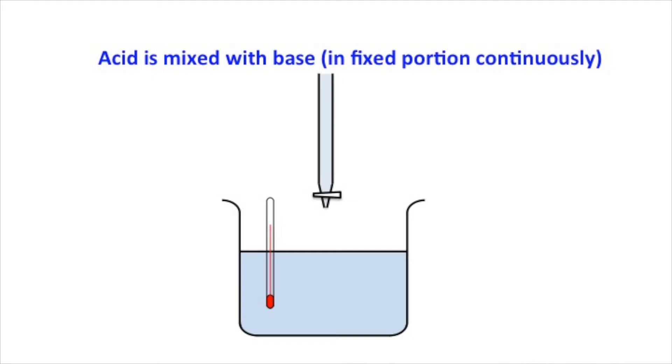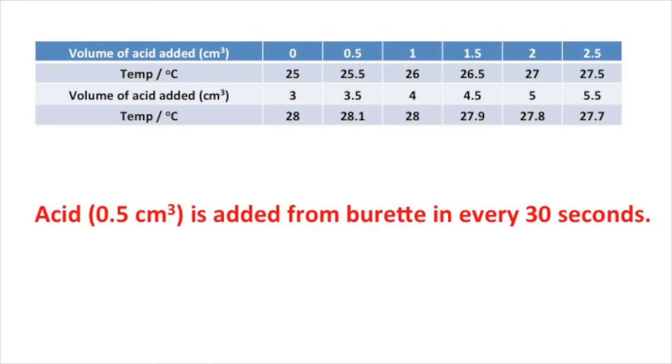For the second experiment, it's acid mixed with base again. This is neutralization, but this time we add a fixed portion continuously. That means we add the solution from the burette every 30 seconds. Here shows we add 0.5 cm³ each time and the temperature change is here.